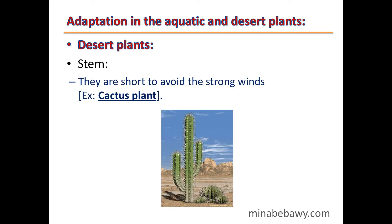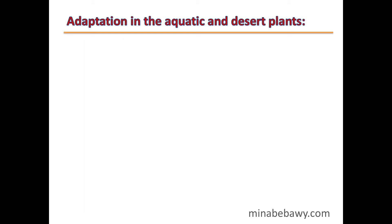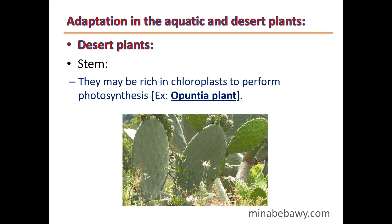The stems of desert plants are short to avoid strong winds, such as in cactus. They may also be rich in chloroplasts to perform photosynthesis, such as in the Opuntia plant.